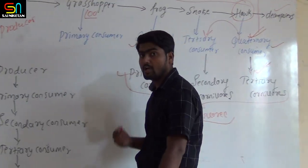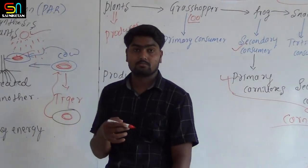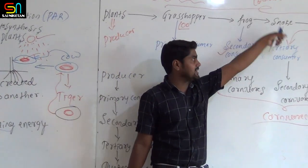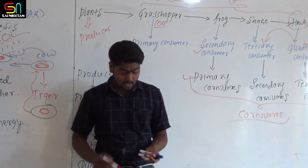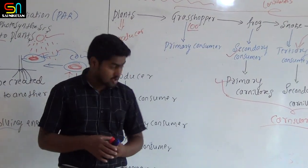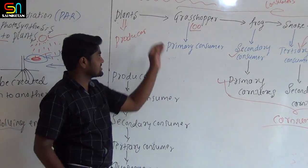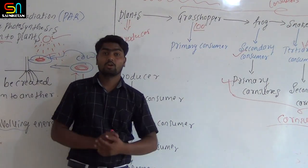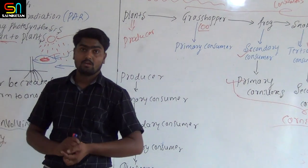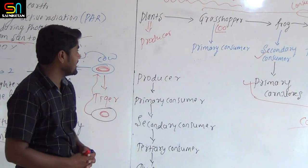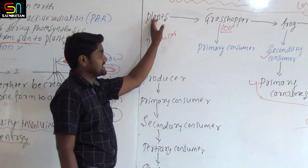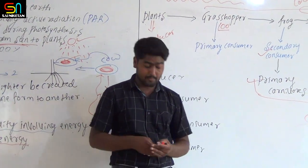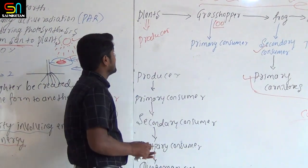Decomposers are those organisms which feed on the dead body of either producers or consumers. That is called decomposers. One more point: trophic level. Trophic level is nothing but each level of a food chain. Each level of a food chain is called a trophic level.